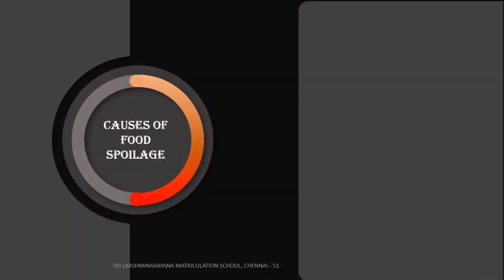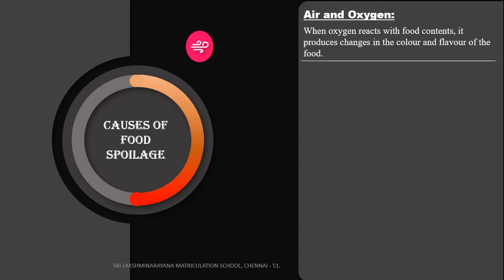Spoiled food becomes unsuitable to eat and it will cause diseases. Causes of food spoilage: food items begin to decompose once they are harvested. There are some factors that cause food spoilage. First, oxygen — when oxygen reacts with food content, it produces changes in color and flavor of the food.